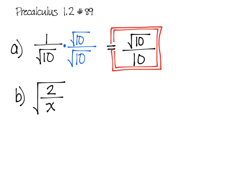In Part B, the first thing I would do here is split that up, so you have it as the square root of 2 over the square root of x, and then following the same procedure we did in Part A, I'm going to rationalize the denominator. I'm not worrying about the numerator at all.